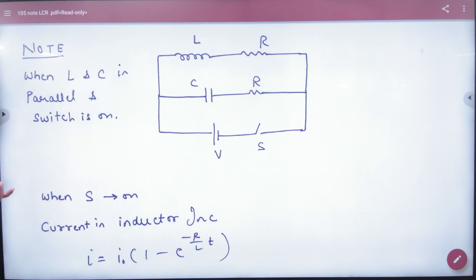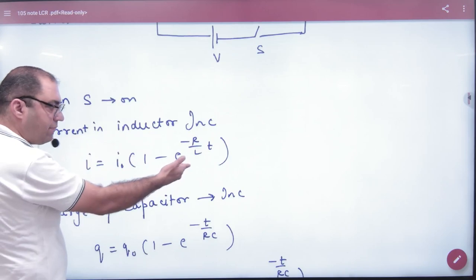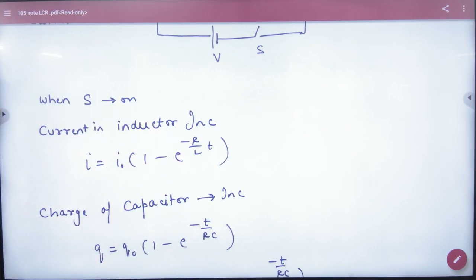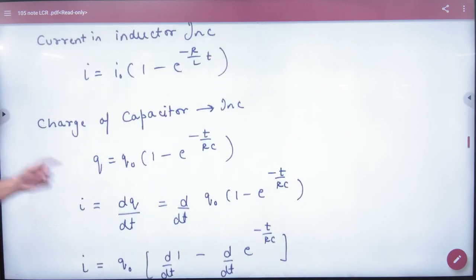How much current will come to the inductor? I is equal to I_0. In the capacitor, how much current will come? In the capacitor we will grow charge.